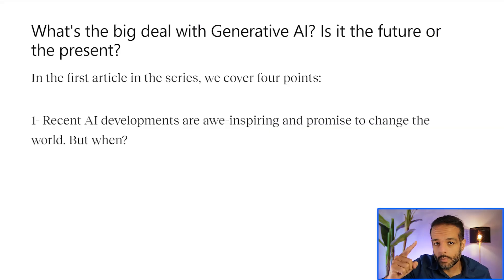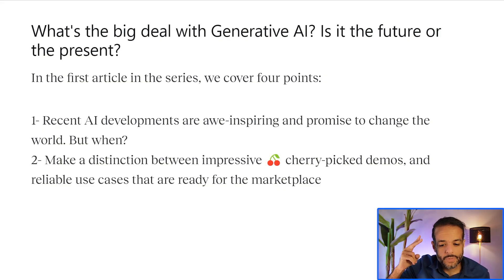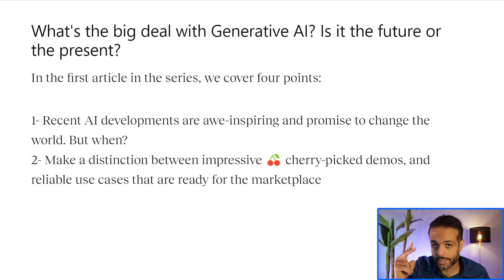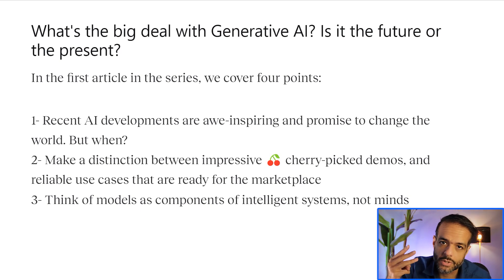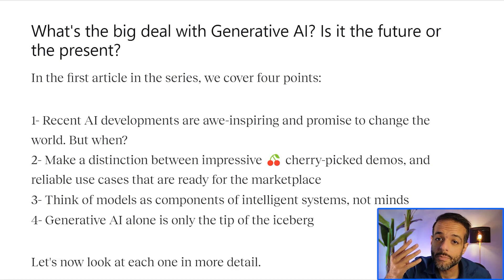Let's go over them quickly and then we'll talk about each one individually to help orient you on generative AI. Number one: recent AI developments are awe-inspiring and promise to change the world — but when? Point number two: make a distinction between impressive cherry-picked demos and reliable use cases that are ready for the marketplace. Point number three: think of AI models as components of intelligent systems, not minds. Point number four: generative AI alone is only the tip of the iceberg.